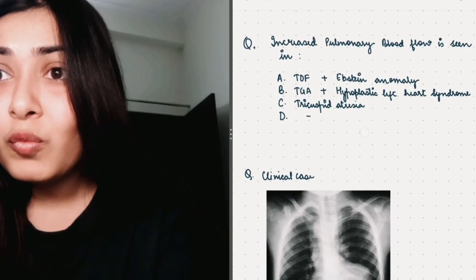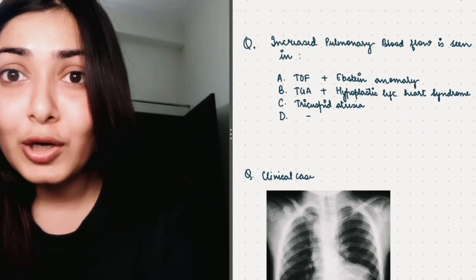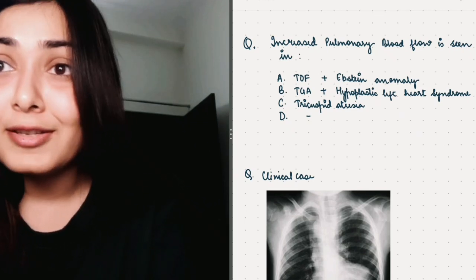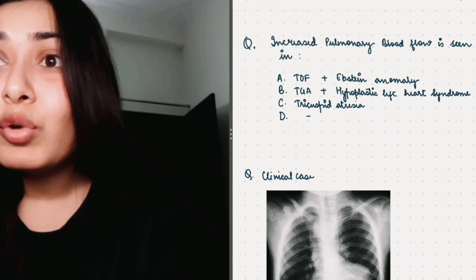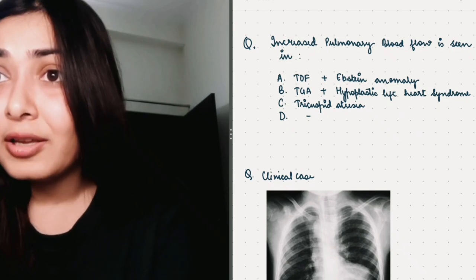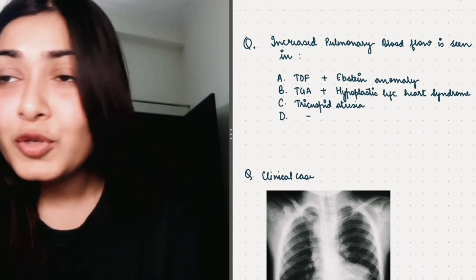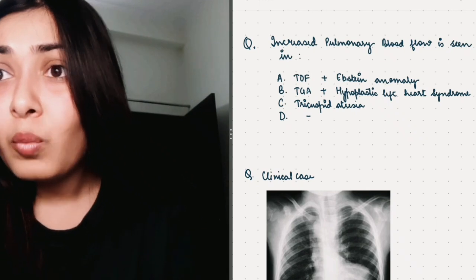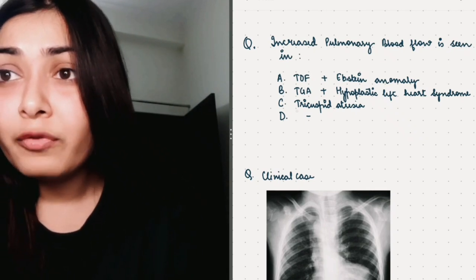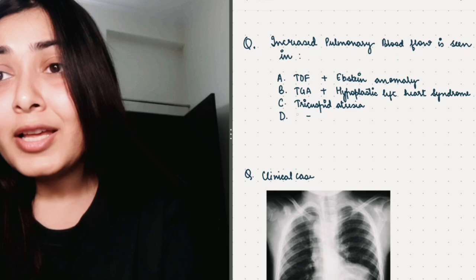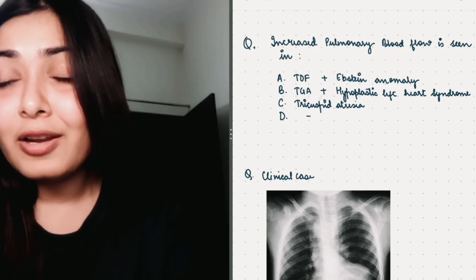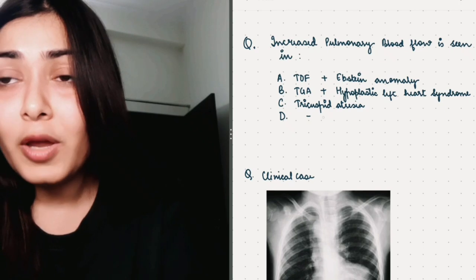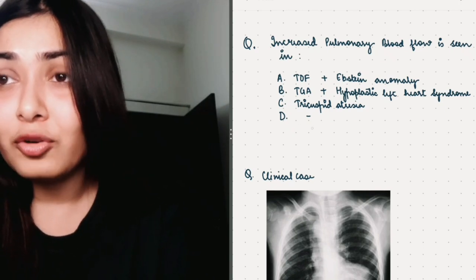So the next question was somehow, there were two questions related to congenital heart diseases. The one was increased pulmonary blood flow is seen in and these are the options that I could recollect. One option was tetralogy of fallot and Ebstein anomaly.